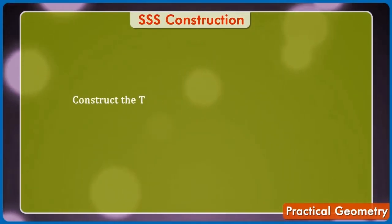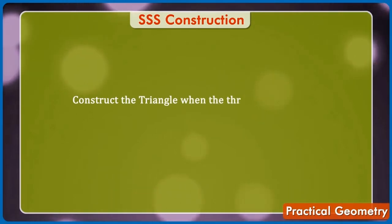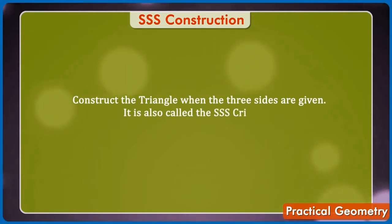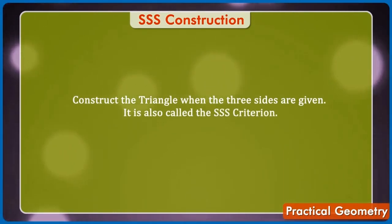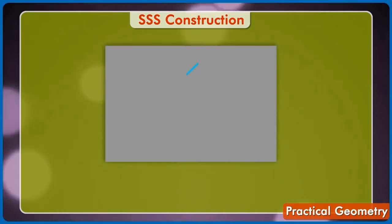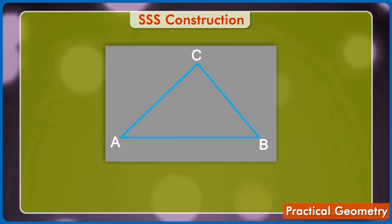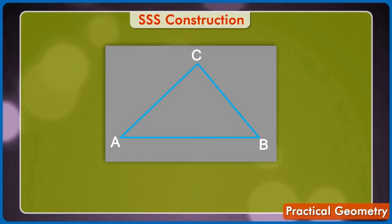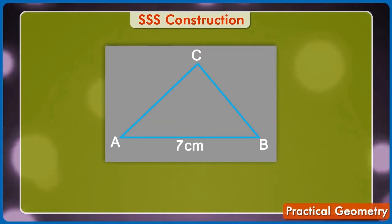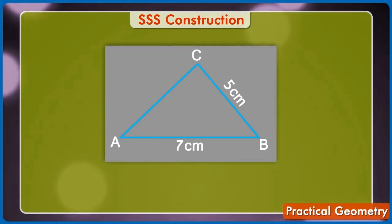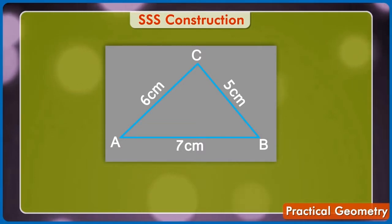Now, let's construct the triangle when the three sides are given. It is also called the SSS criterion. For example, suppose we want to construct a triangle ABC with side AB is equal to 7 cm, BC is equal to 5 cm and AC is equal to 6 cm.